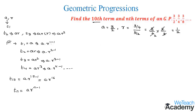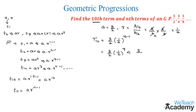Since we need to find the 10th term, let us substitute the values of A and R in the formula. We get 3/2 into (1/2) power n minus 1, where n minus 1 equals 10 minus 1 equals 9. This gives us 3/2 into (1/2) power 9. Since the bases in the denominator are equal, we add the powers to get 3 divided by 2 power 10. This is the 10th term of the given geometric progression.